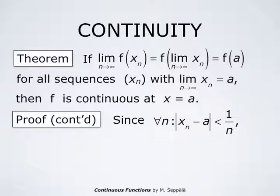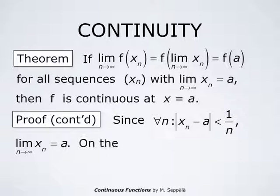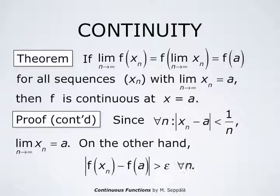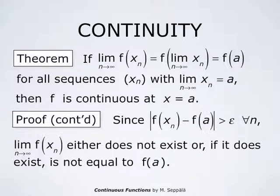Now we have found the numbers x_n with the property that for all n the absolute value of x_n minus a is less than 1 over n. This means that the limit of the numbers x_n is a, so the sequence x_n converges and its limit is a. On the other hand, the absolute value of f at x_n minus f at a is larger than epsilon for all n. This means that the sequence of the numbers f at x_n either does not converge, or if the limit exists, it is not equal to f at a. This completes the proof.